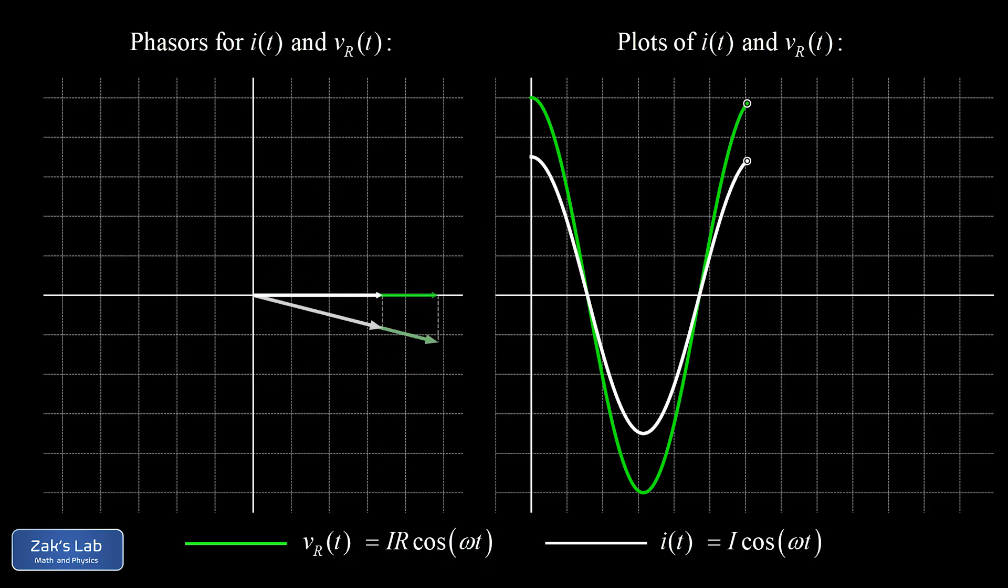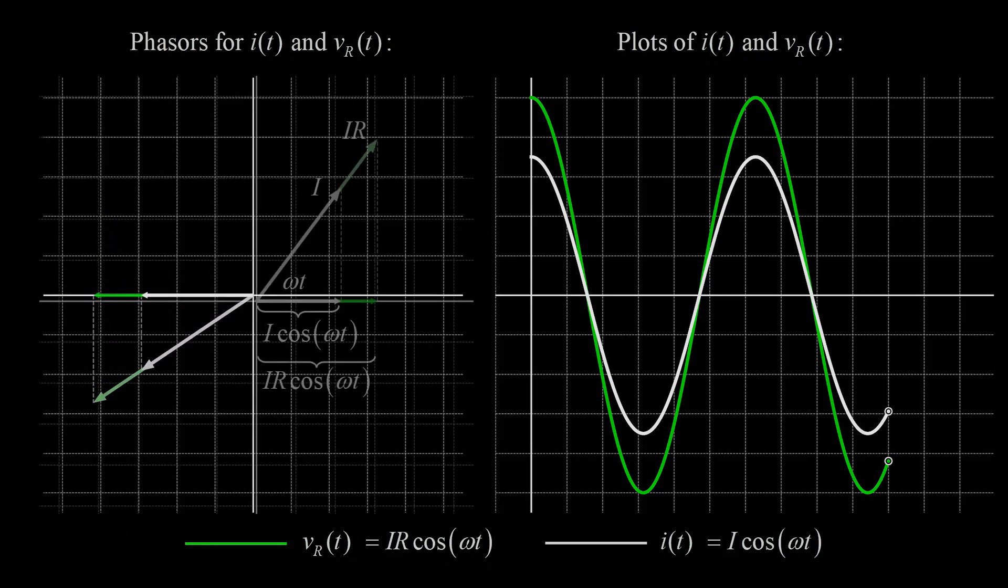In the next video, we use the phasor approach to analyze an inductor. And this is where things start to get interesting. It turns out that the voltage across an inductor is out of phase with the current passing through it. I'll post a link to that video at the upper left of the end screen. And I'll see you there.